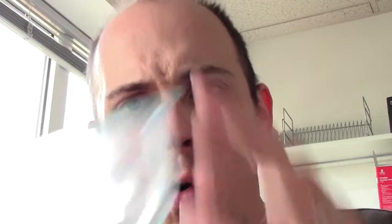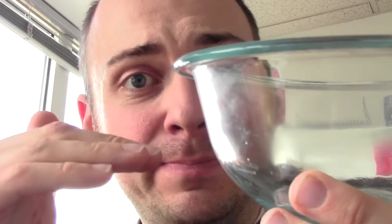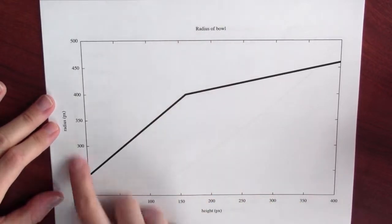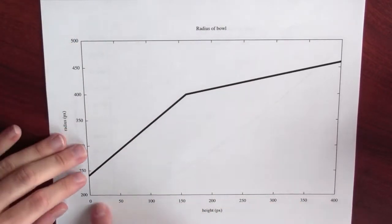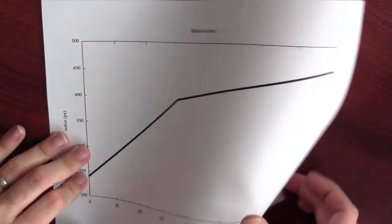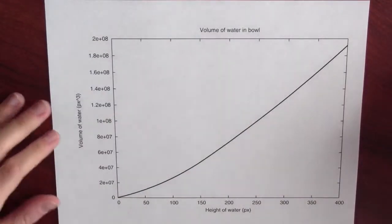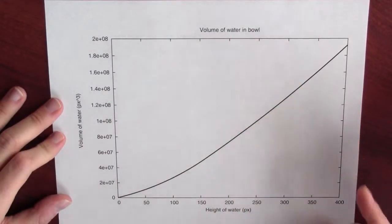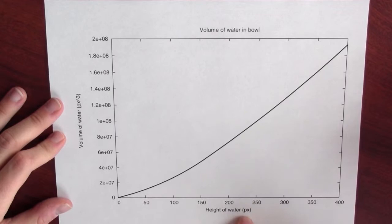Once I know what the radius of the bowl is at a particular height, I can then think about the volume of water when the water level is at some given height. So once I know the radius of the bowl at a particular height from the bottom of the bowl, I can then make a graph that shows the volume of water in the bowl, given a particular height of water.